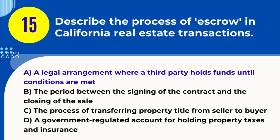Explanation. In California real estate transactions, escrow refers to a legal arrangement in which a neutral third party, the escrow agent, temporarily holds funds, documents, and other assets until specific conditions of the transaction are met, such as the completion of a property inspection or securing financing.